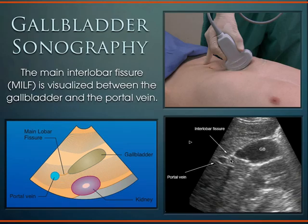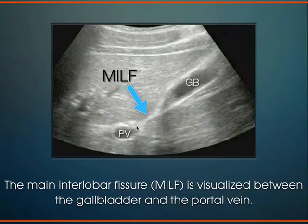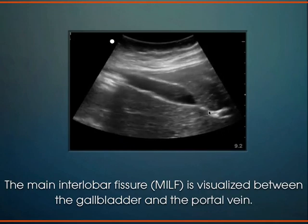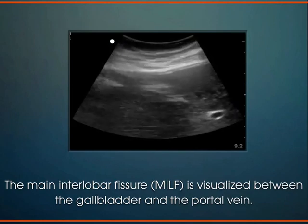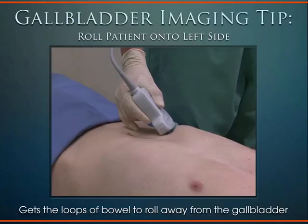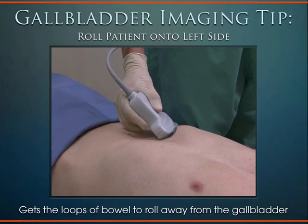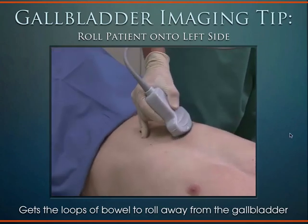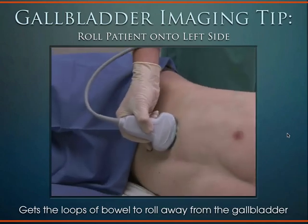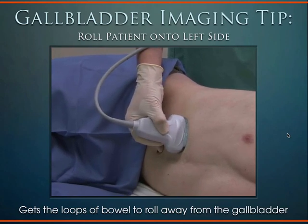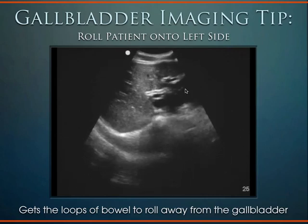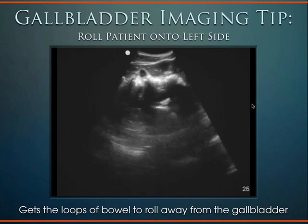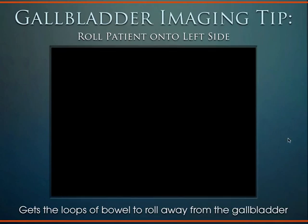Here we can see examples of the main interlobar fissure — from portal vein to neck of the gallbladder — which is the landmark where the right and left lobes of the liver meet, forming the fossa the gallbladder sits in. Rolling the patient to the left lateral decubitus position is a key technique: it causes bowel loops to fall out of the way, making the gallbladder much easier to visualize. This trick is especially useful when a resident is struggling to find it.